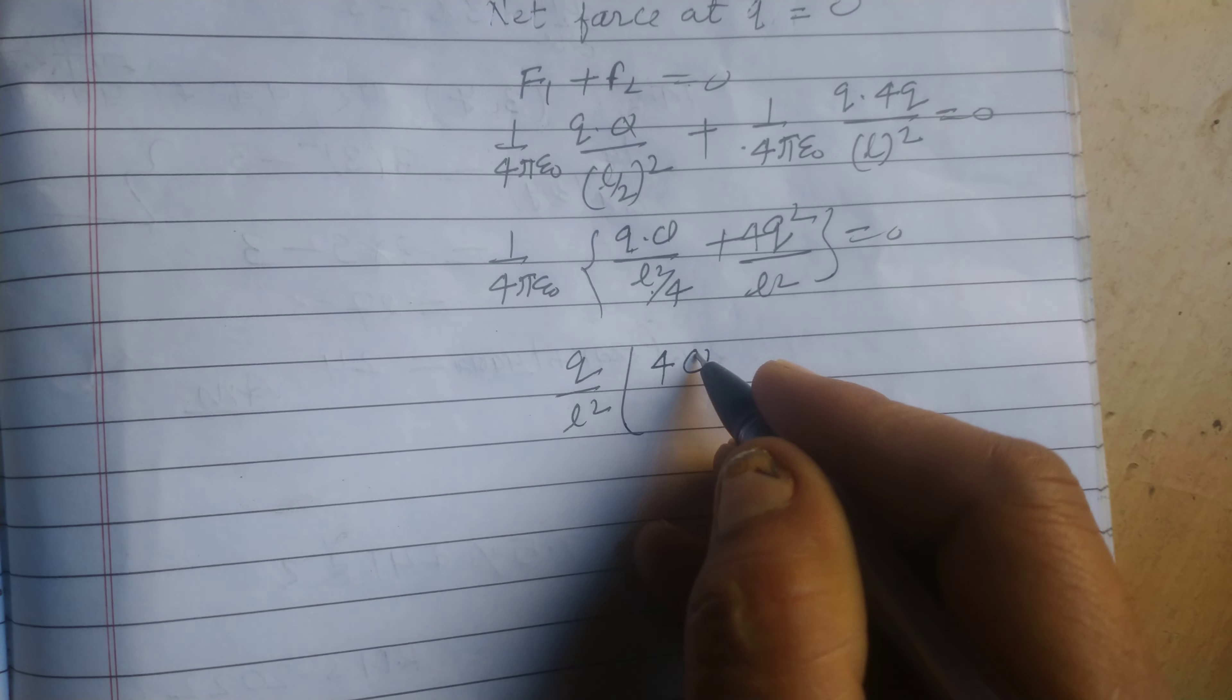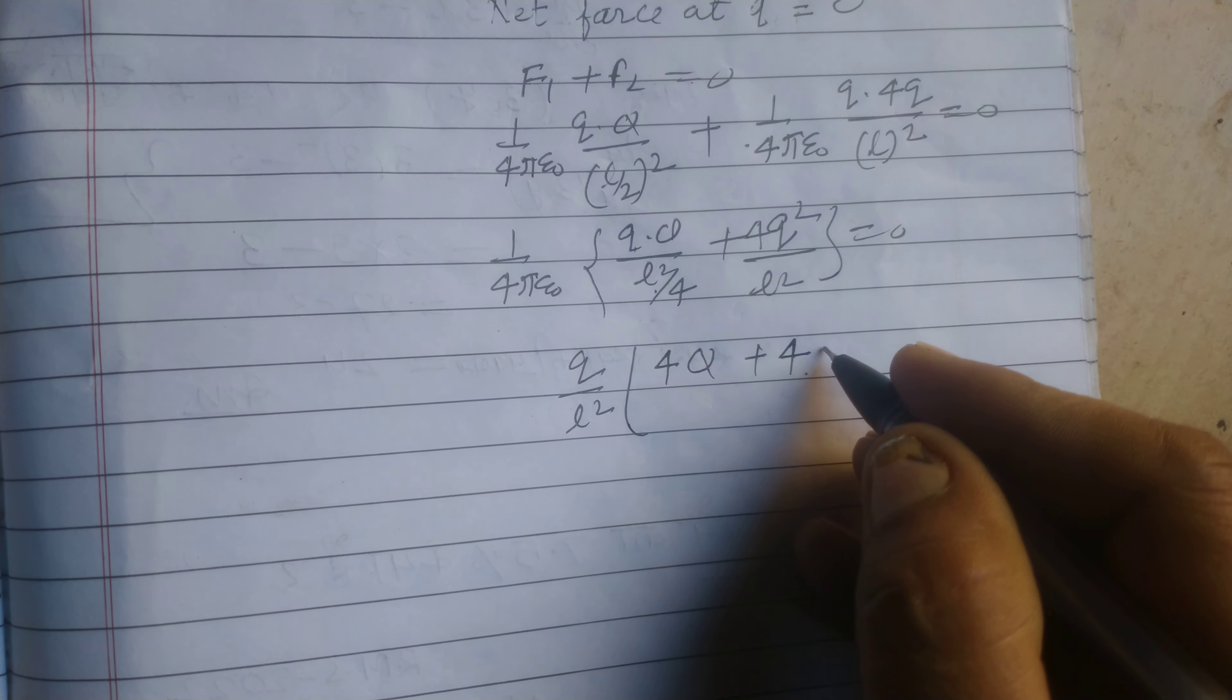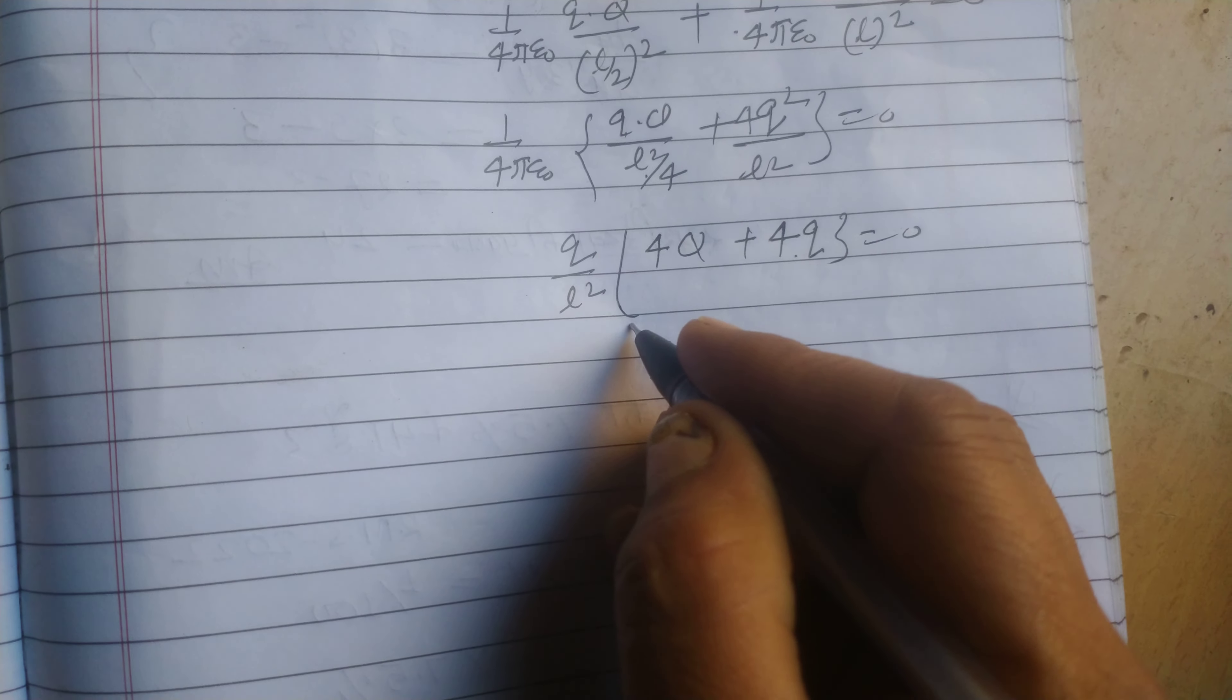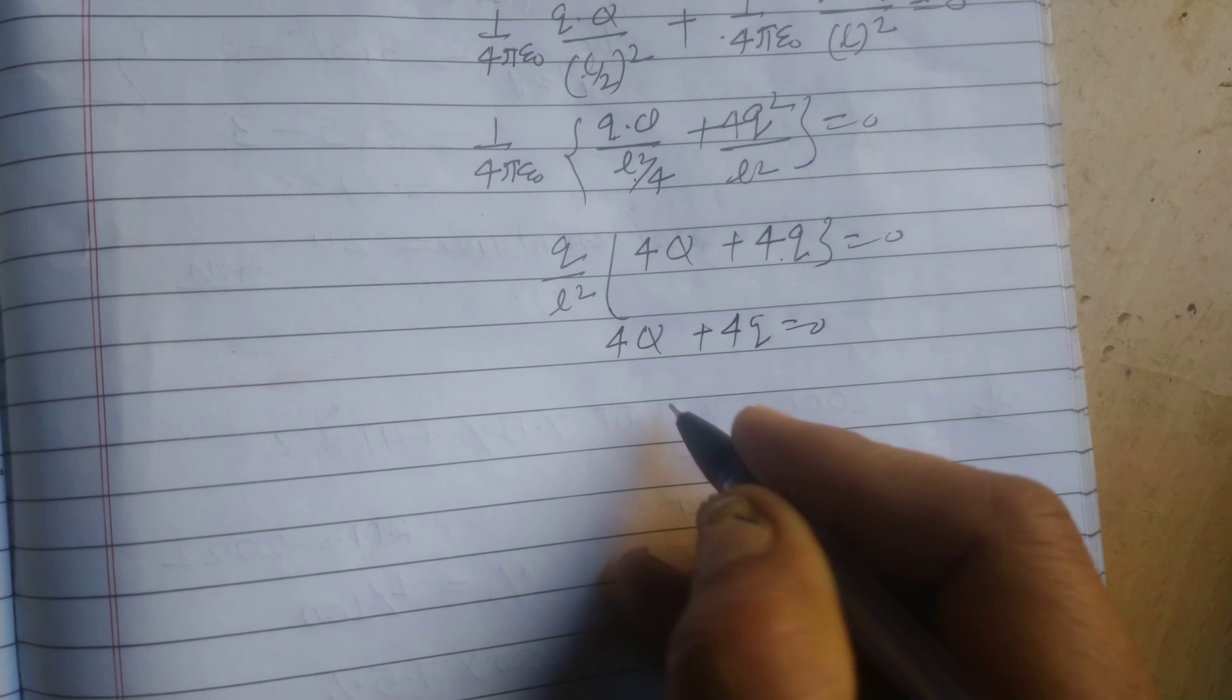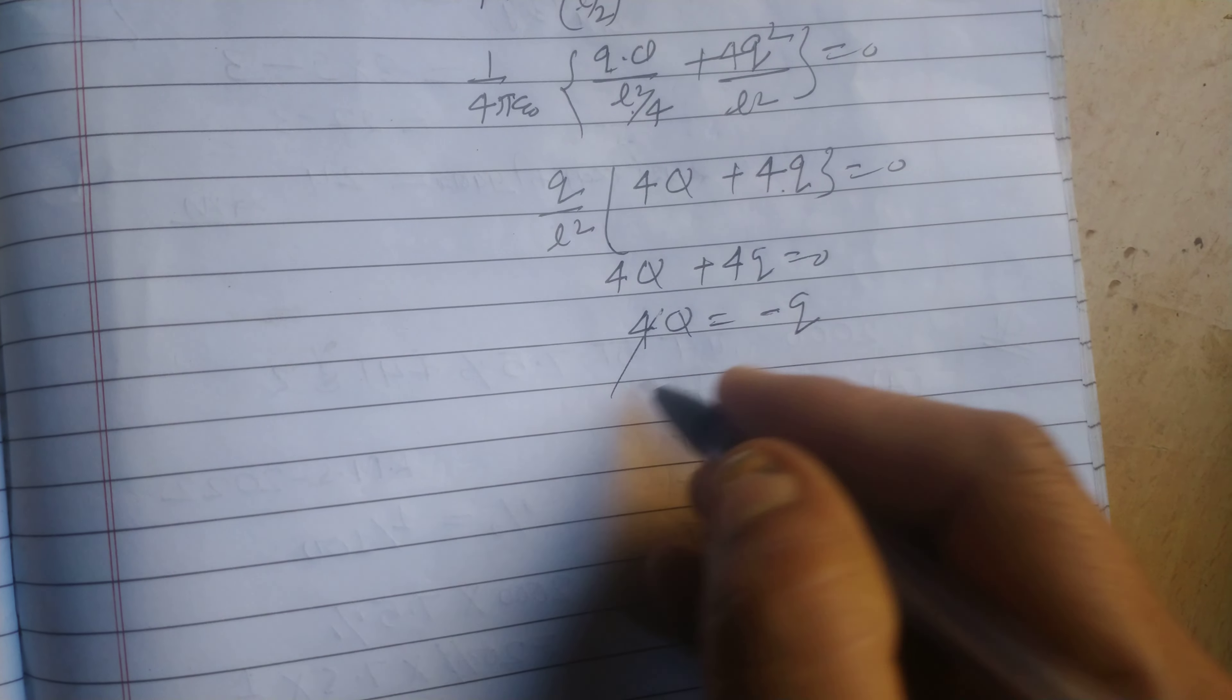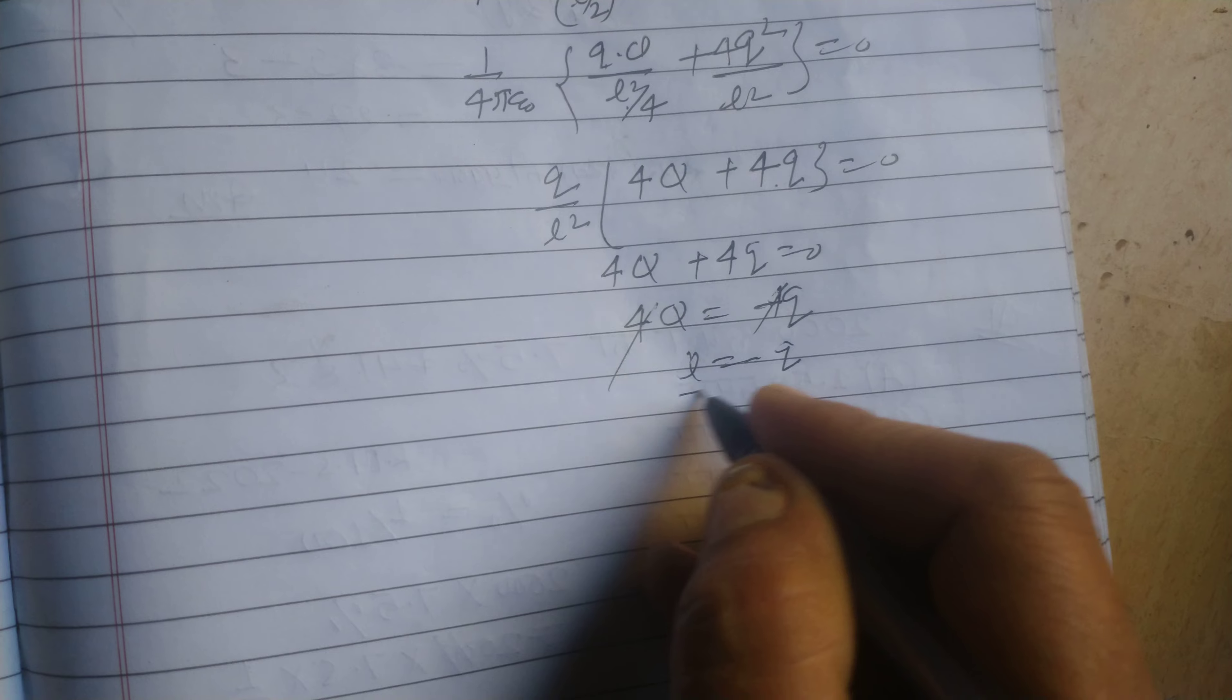So this becomes 4Q capital Q plus 4 small q equal to zero. We got 4Q plus 4q equal to zero, or 4Q equal to minus Q, or Q equal to minus 4Q. After canceling, Q equal to minus Q.